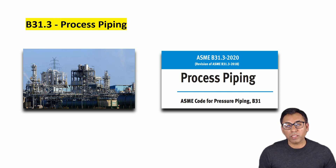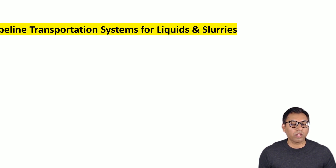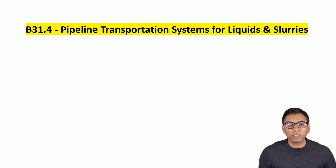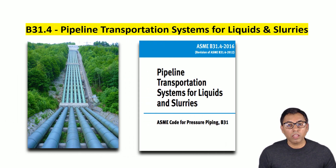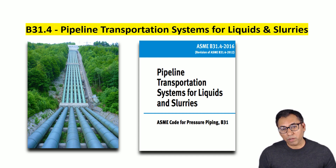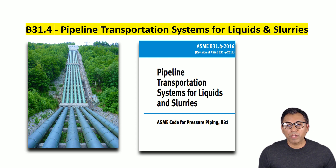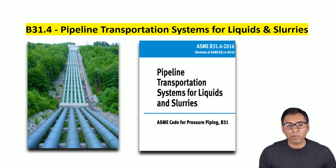The next chapter is B31.4, which covers Pipeline Transportation Systems for Liquid Hydrocarbons and Other Liquids. This is the design code for pipelines transporting liquids and slurries between facilities like production and storage fields, plants and terminals, and within terminals, pumping, regulating and metering stations associated with liquid pipeline systems.